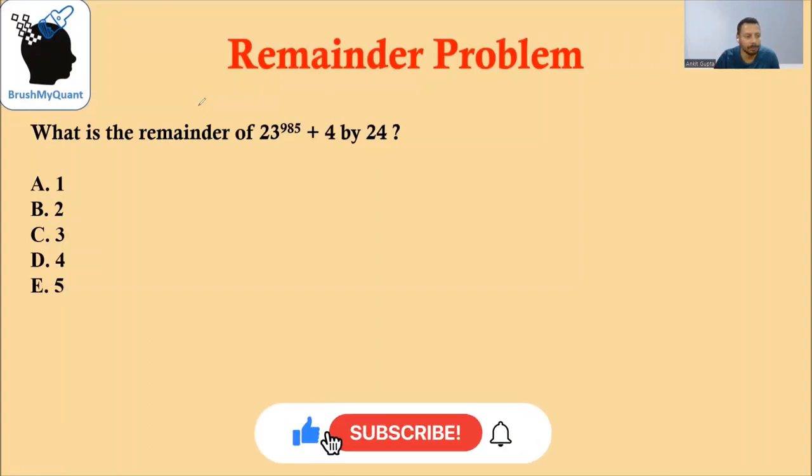Hi, we'll be solving a remainders problem today. What is the remainder when 23 raised to 985 plus 4 is divided by 24? So a big number is given to us. We have to calculate 23 raised to 985 plus 4 and divide it by 24.